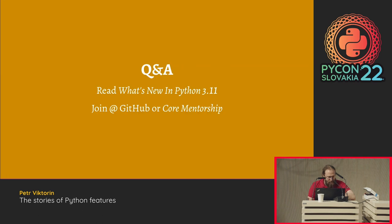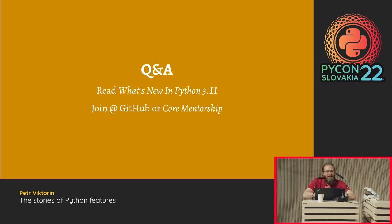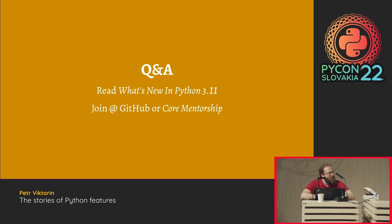If you're interested in this kind of stuff, read through what's new, follow the links, find your own stories. If you would like to join, file an issue on GitHub, send a pull request. The best thing you can do if you're serious about helping Python and getting new features in is joining core mentorship — Google 'Python core mentorship' for a page with links about how it's done.